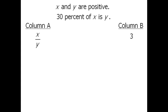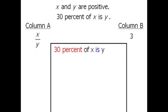To begin, we are told that 30% of x is y. We can convert this to a mathematical equation by recognizing that 30% of x is the same as 30 over 100 times x. We can simplify this to be 30x over 100.